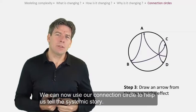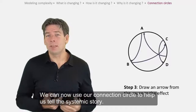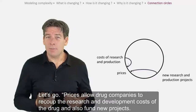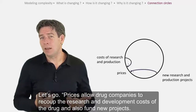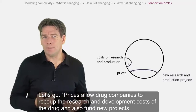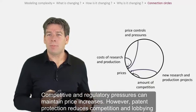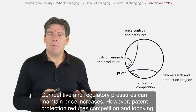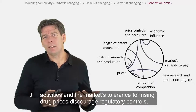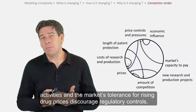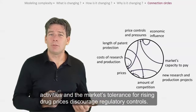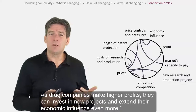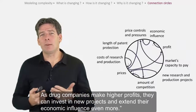We can now use our connection circle to help us tell the systemic story. Prices allow drug companies to recoup the research and development costs of the drug and also fund new projects. Competitive regulatory pressures can maintain price increases. However, patent protection reduces competition, and lobbying activities and the market's tolerance for rising drug prices discourage regulatory controls. As drug companies make higher profits, they can invest in new projects and extend their economic influence even more.